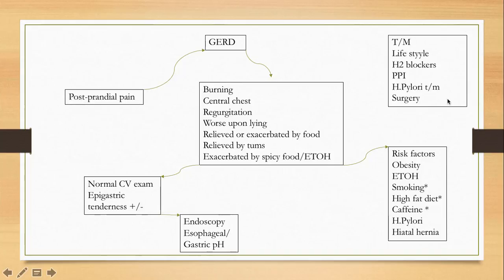Treatment: lifestyle modification is the hallmark. H2 blockers and proton pump inhibitors are the medications that can be used. H. pylori treatment will be needed if diagnosed, and surgery is the last resort if medical treatment fails.